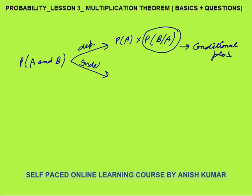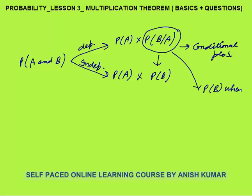In case of independent events, there will be only two kinds of events — dependent or independent. For independent events, it will be probability of A into probability of B. Because probability of B given A actually means probability of B when A has happened. Now as we say that events are independent, by common sense, independent means that probability of one event does not depend upon the probability of other events. Whenever events are independent, probability of B — whether A has happened or not — does not depend. So probability of B given A, whenever the events are independent, equals probability of B. In simply manner, for independent events the probabilities will get simply multiplied.